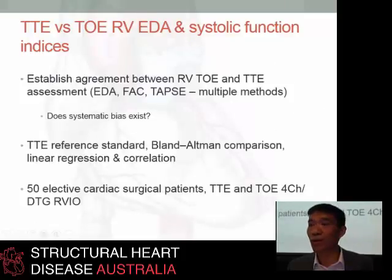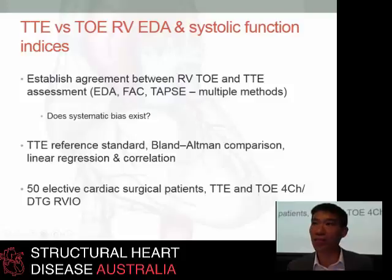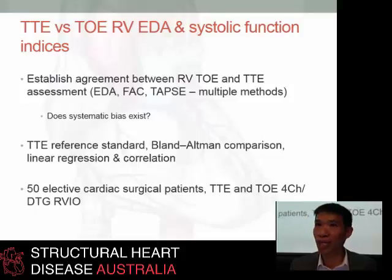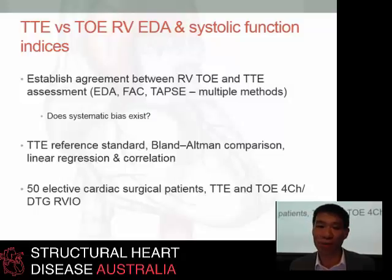So what we decided to do was to test these hypotheses and look to see if there was in fact any systematic bias or underestimation between these validated measures used in transthoracic and what we are trying to use them for in the operating theatre by TOE. We looked at end-diastolic area as a convenient method of looking at a surrogate of end-diastolic volume of the right ventricle — because really what we're looking at intraoperatively is how our volume interventions change the right ventricular ejection fraction or systolic function as we load them higher and higher.